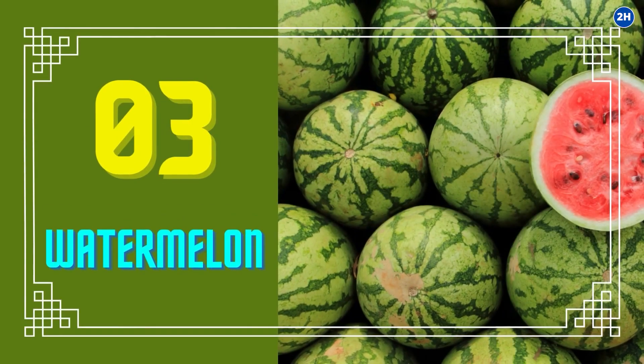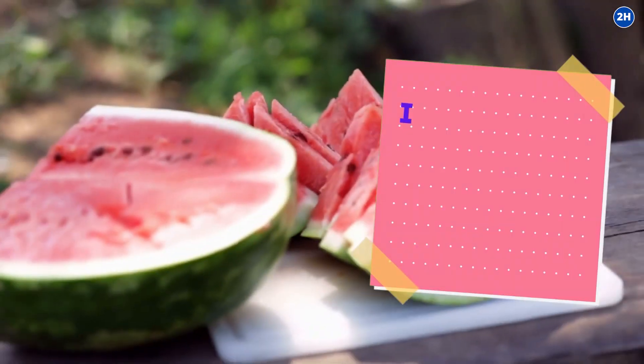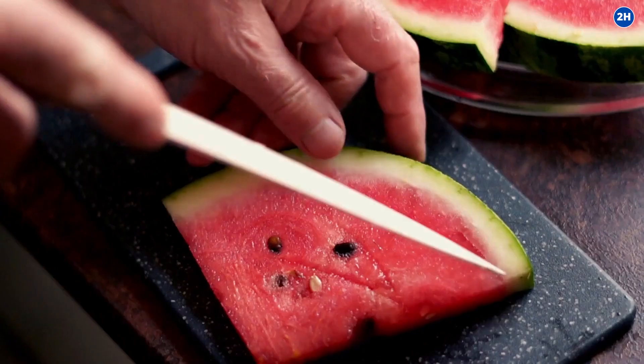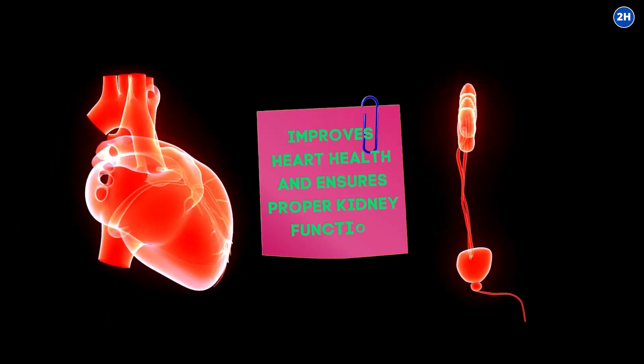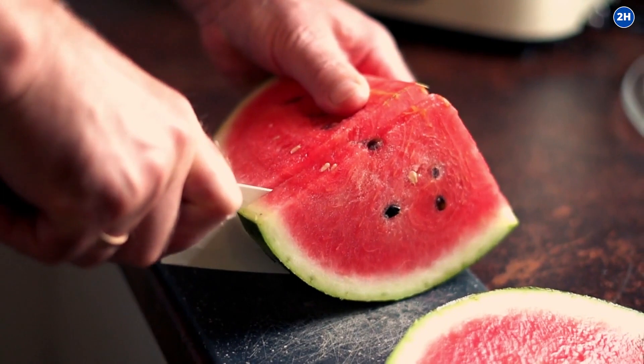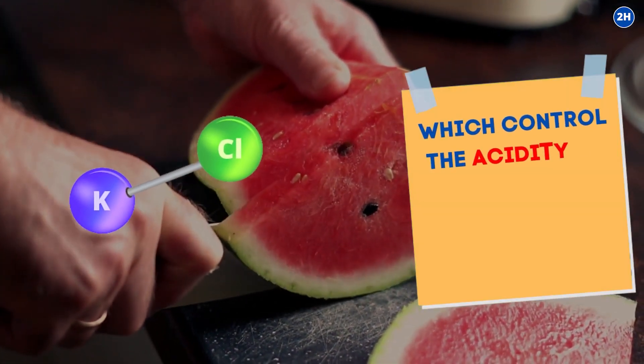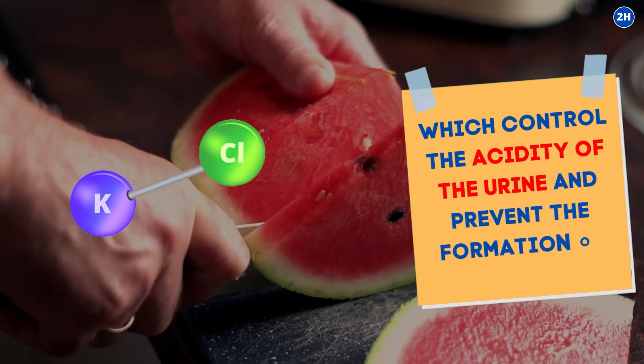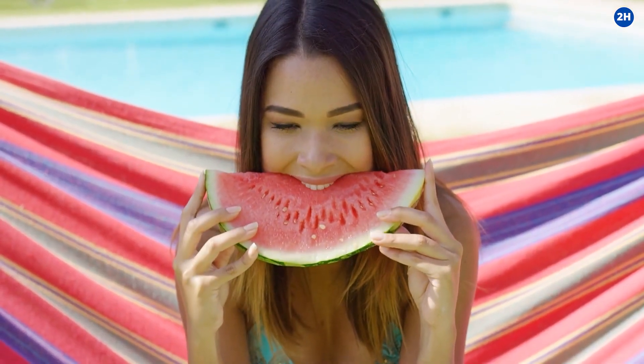3. Watermelon. Watermelon is a mild diuretic. It hydrates and cleanses the kidneys. It is also rich in lycopene, which improves heart health and ensures proper kidney function. Watermelon also contains a large number of potassium salts, which control the acidity of the urine and prevent the formation of stones. Eating watermelon regularly is very good for kidney health.